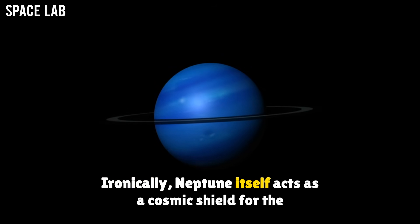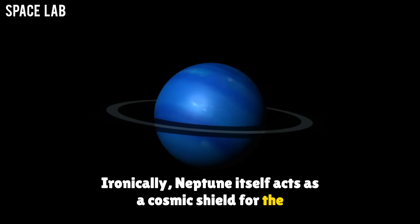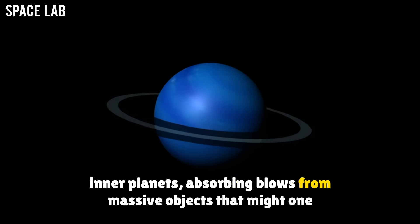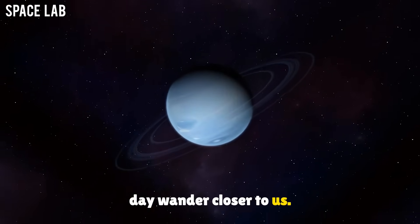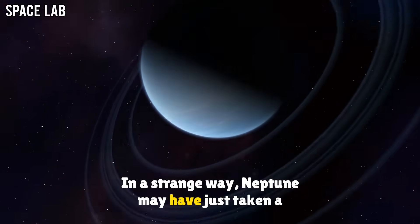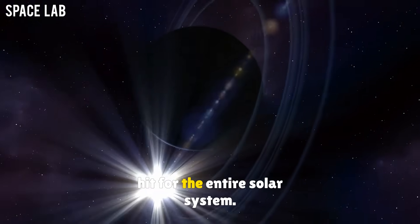Ironically, Neptune itself acts as a cosmic shield for the inner planets, absorbing blows from massive objects that might one day wander closer to us. In a strange way, Neptune may have just taken a hit for the entire solar system.